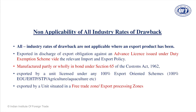Under Section 75, drawback is not given when goods are under Advanced License. DGFT issues two types of licenses under Chapter 4: Advanced Authorization and Duty Free Import Authorization (DFIA). If you are availing either of these, you are not entitled to duty drawback. There are special cases where even with these two licenses you can avail duty drawback, but those require a lot of documentation and pre-planning. As a general rule: with Advanced Authorization and DFIA, you cannot get duty drawback.